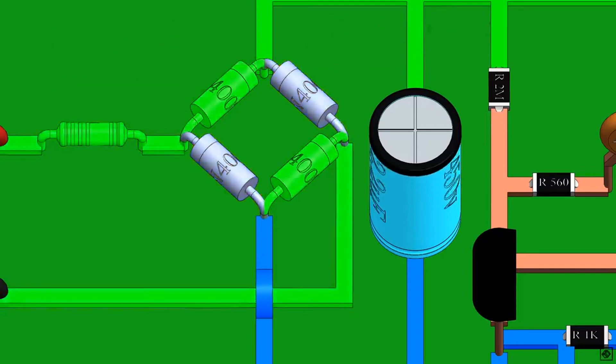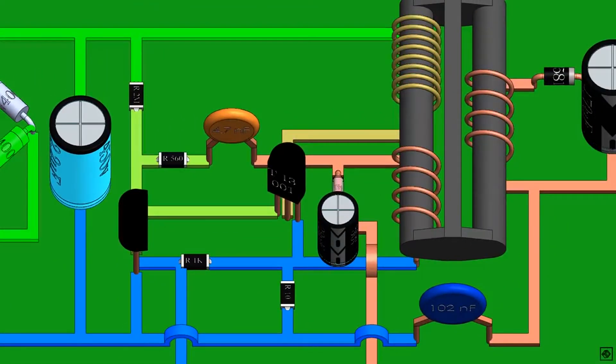This current passes from the 2 megaohm resistor to the base of T1, turning it on. This transistor isn't fully turned on because of the resistance. It turns on partially.